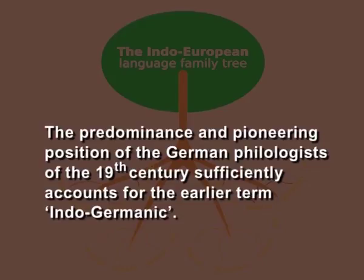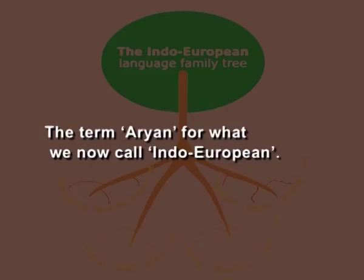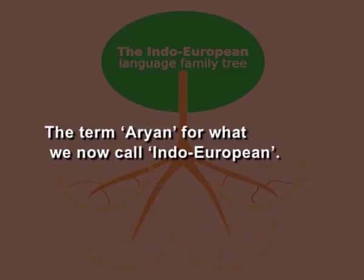The predominance and pioneering position of the German philologists of the 19th century sufficiently accounts for the earlier term Indo-Germanic. The belief among the predecessors of the more scientific German philologists that Sanskrit was the ancestor of all the European and Asiatic languages may explain the use of the term Aryan for what we now call Indo-European.